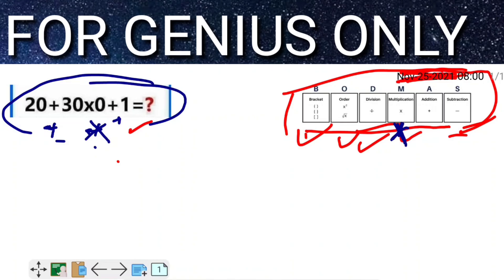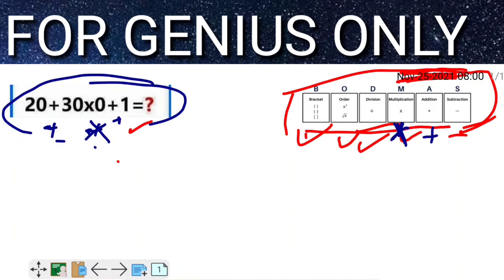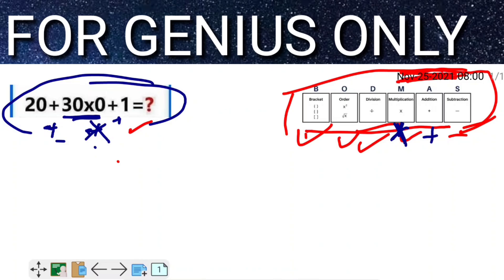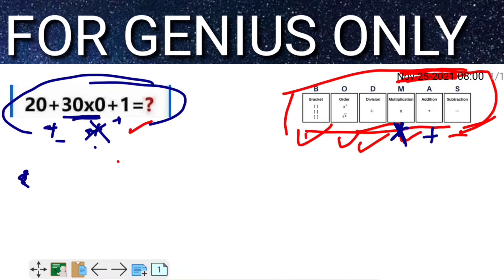So now I will do the multiplication first. Friends, now you watch: 20 + 30 × 0 + 1.